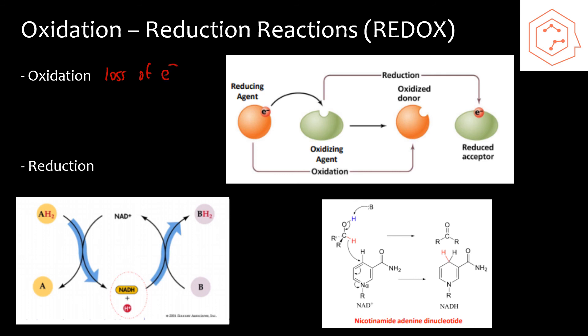Oxidation is the process that results in the loss of electrons. And in reduction, you have the gaining of electrons. The way I remember this is Leo the lion goes ger. You see oxidation and you see reduction.